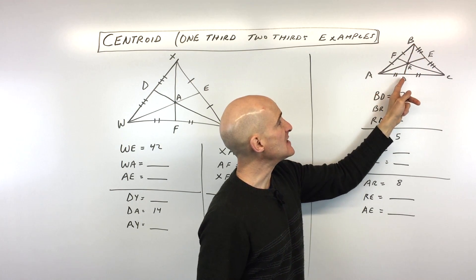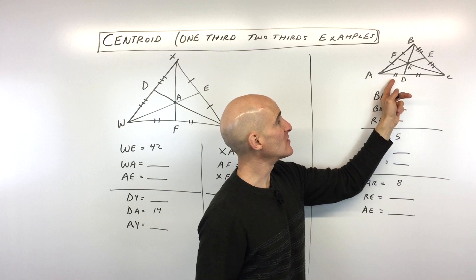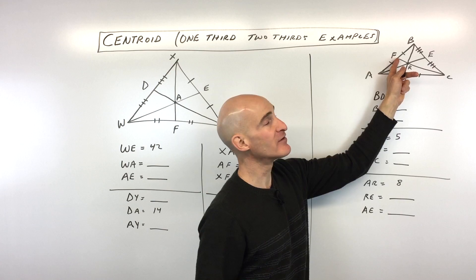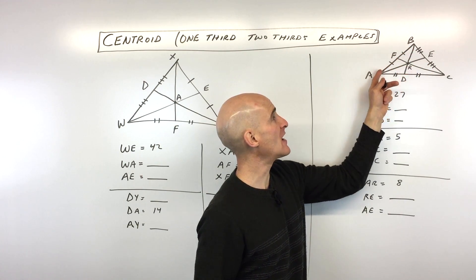And then also look over here BD. That's bisecting AC. So these two are congruent. And then you can see CF is going from the vertex to the middle of that opposite side. So BF is congruent to FA.